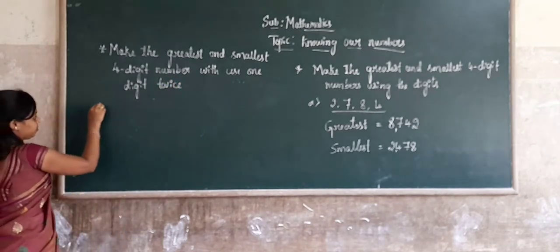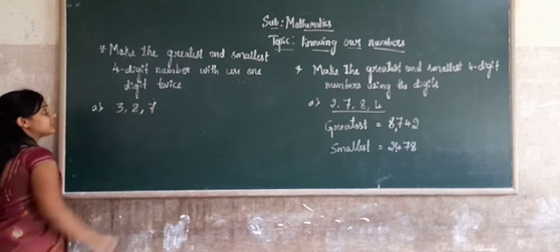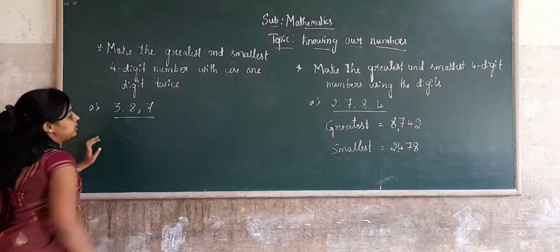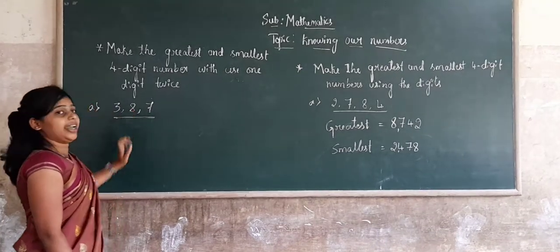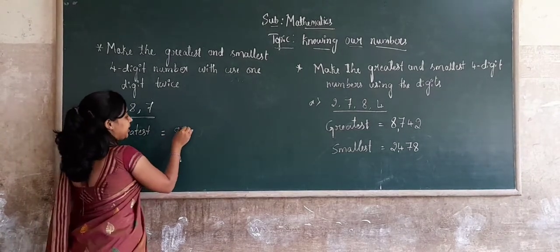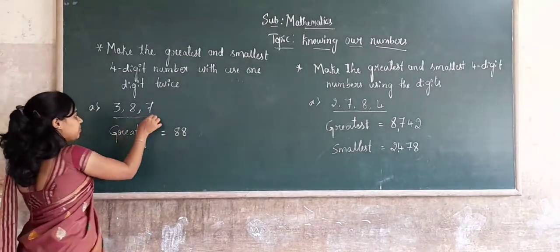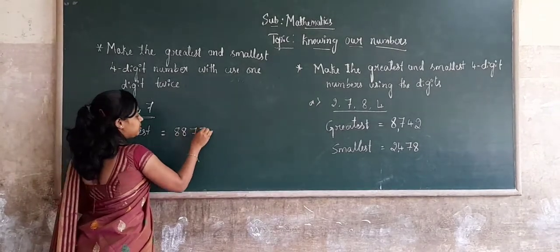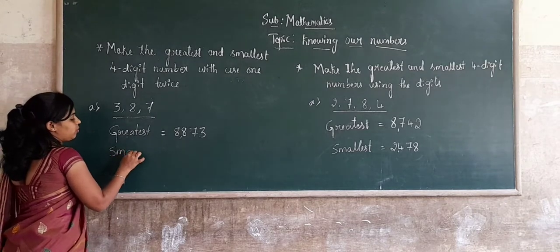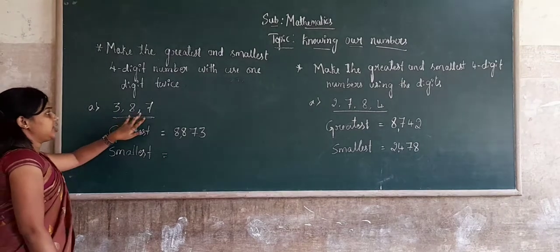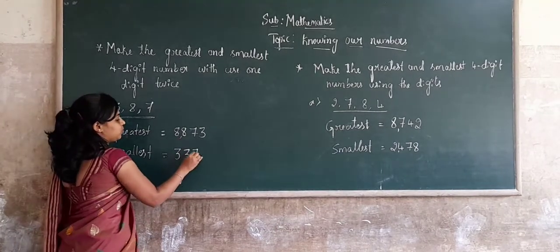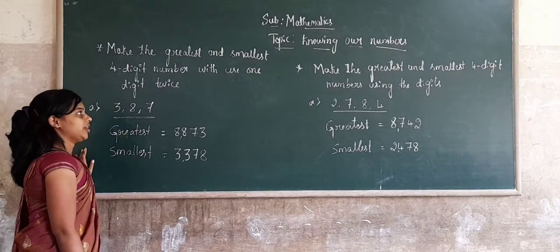Now consider an example using digits 3, 8, 7, where one digit is used twice. Here we find the greatest and smallest 4-digit number. The greater digit is 8, so we use 8 twice. Arranging in descending order: 8, 8, 7, 3 — the greatest 4-digit number is 8,873. To form the smallest 4-digit number, 3 is the smallest digit, so we write 3 twice. Arranging in ascending order: 3, 3, 7, 8 — giving the smallest 4-digit number 3,378.